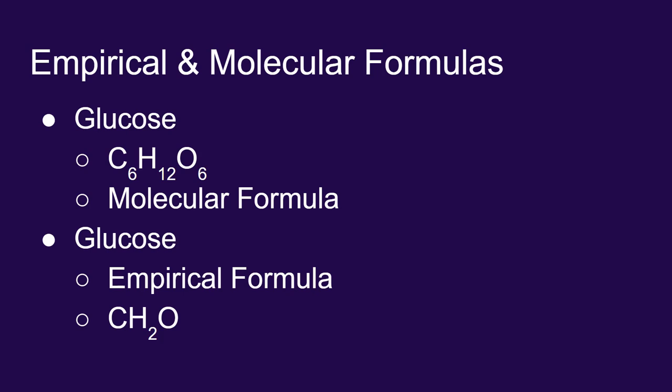What an empirical formula does show you is the ratio of the atoms in a molecule. So we know that for every one carbon, there are two hydrogens, and for every one carbon, there is one oxygen. And that's true if we talk about atoms or moles. For every one mole of carbon in glucose, there's two moles of hydrogen and one mole of oxygen.